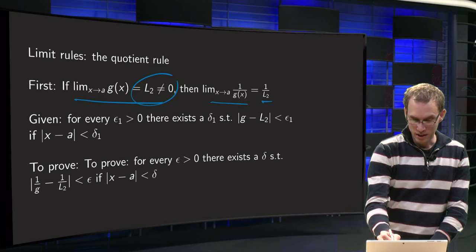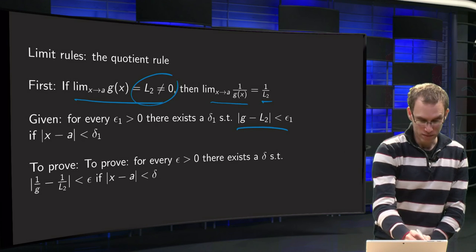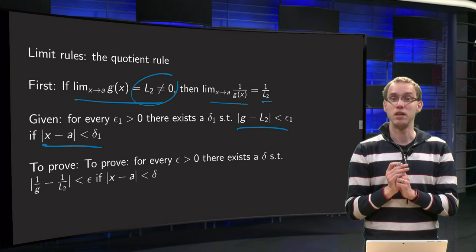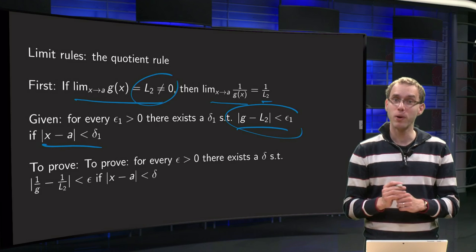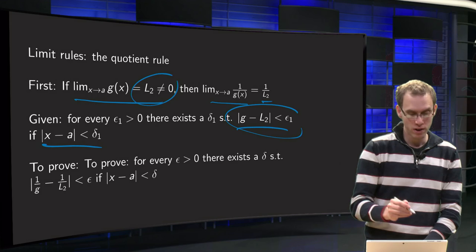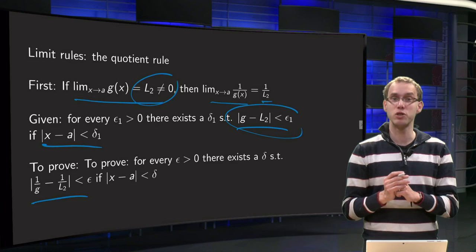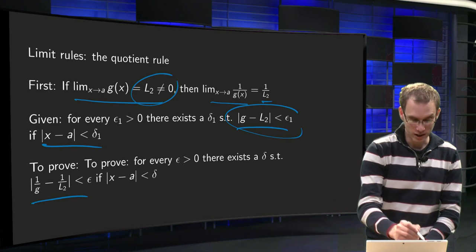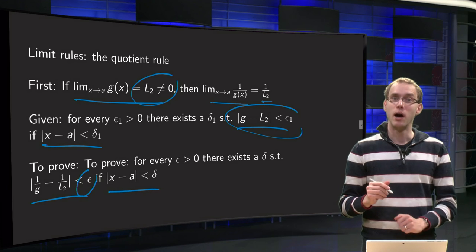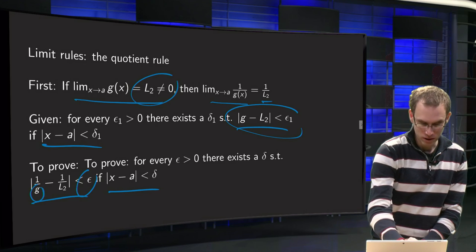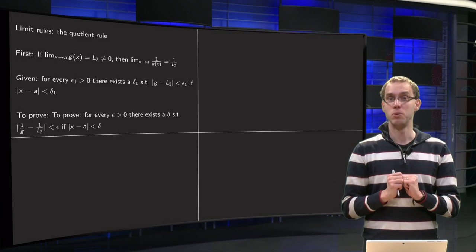So, what is given? We can make g minus L₂ small. Given any ε₁ greater than 0, we have a δ₁ such that if the norm of x minus a is smaller than δ₁, then the norm of g minus L₂ will be smaller than ε₁. That is what is given. What do we need to prove? We need to show something about 1/g minus 1/L₂ — we need to make that smaller than some ε > 0, provided x minus a is smaller than δ. The problem is we must avoid zeros in the denominator.